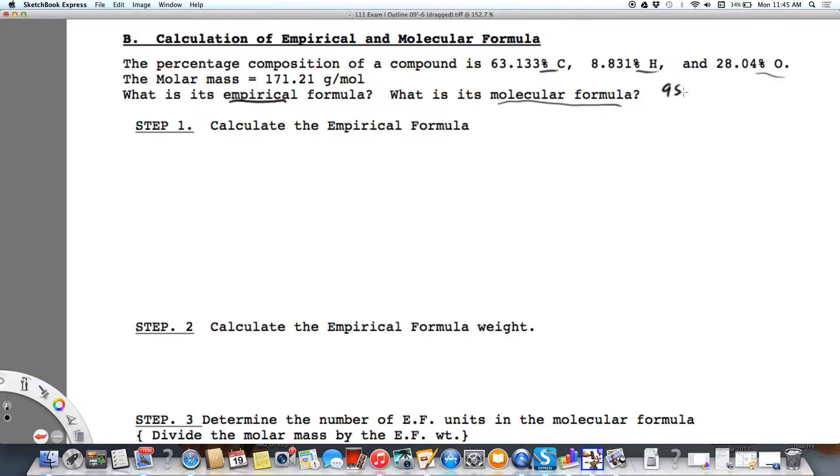So I'm going to assume that I have 100 grams of the compound. That will make all of these percentages equal to grams. So I'm going to change 63.133 grams of carbon into moles. So we have 5.257 moles of carbon and I'm going to do the same for hydrogen.